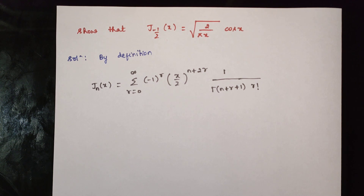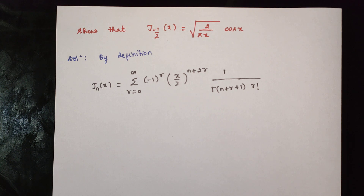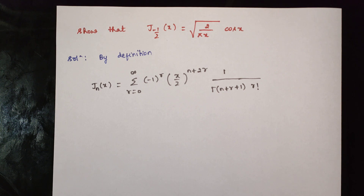Next question: show that J₋₁/₂(x) is equal to √(2/πx) · cos(x). By definition, J_n(x) is given by the formula: summation from r=0 to infinity of (−1)^r · (x/2)^(n+2r) · [1 / (Γ(n+r+1) · r!)].